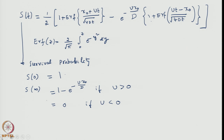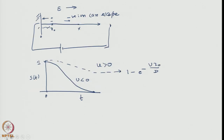Since S(t) involves error functions, when we differentiate an error function we get a Gaussian. There is a further differentiation to be carried out with respect to t, which will involve power-law terms. Similar terms combine from both parts, and it is a bit of tedious algebra.